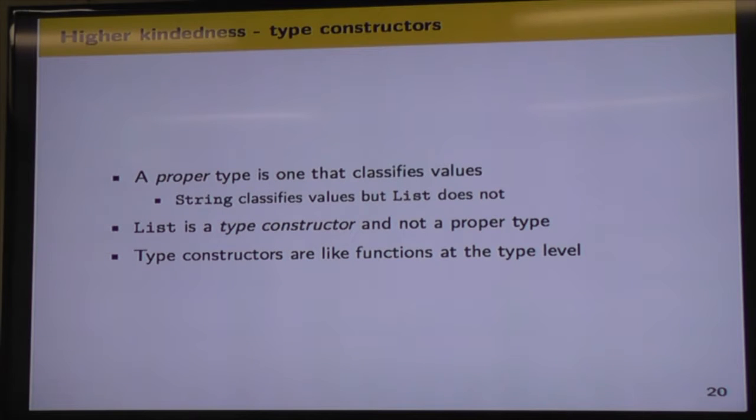So if we're going to get into higher kindness, we're going to start with looking at what a proper type is. So a proper type, at least in this context, is one that classifies values. So we can think of types like string and integer or int as those that classify our values. We can have a value of type int. Something like list on its own is not actually a proper type. We can't have a value of type list. We need to know what the elements of that list, the type of those elements rather. So a list of int or a list of string.